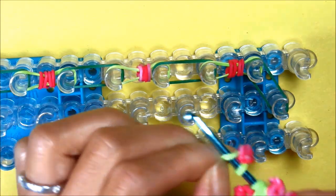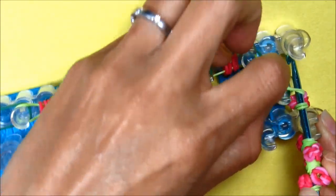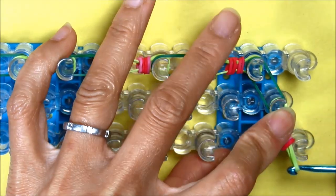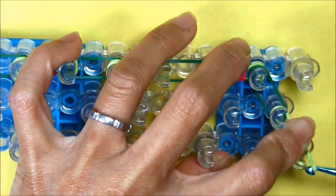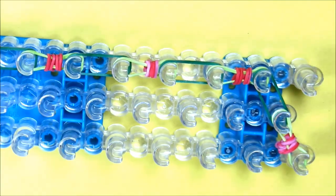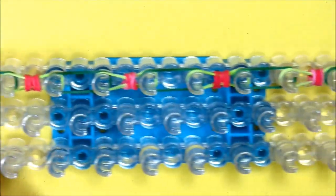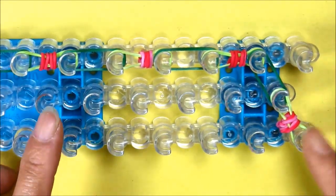And my last one for this so far will come diagonally to the left side of my loom. So that's what your bracelet should look like so far, ending there.